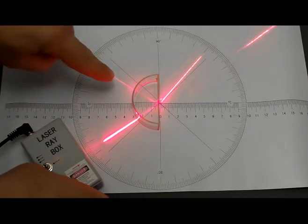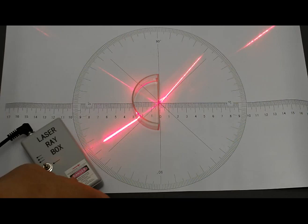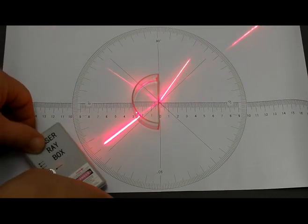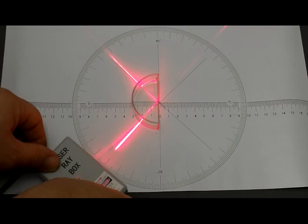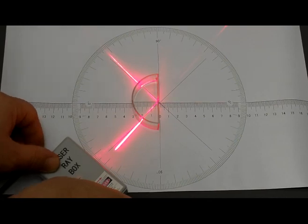So have the students concentrate on this one and find that angle where it just refracts at 90 degrees, and then you have internal reflection.